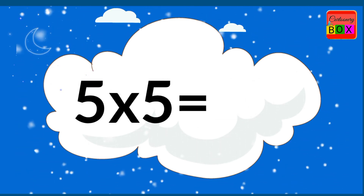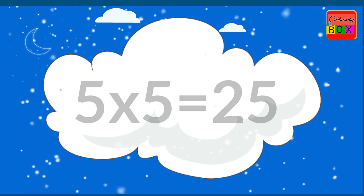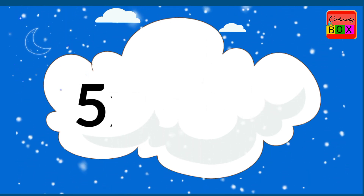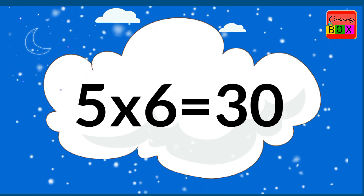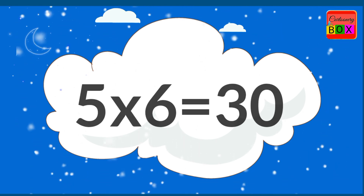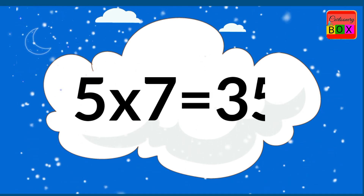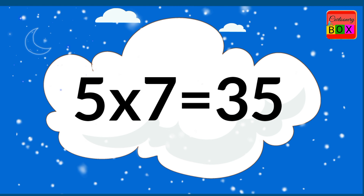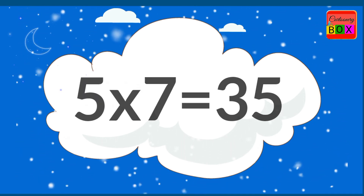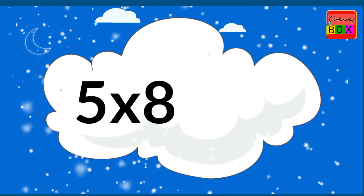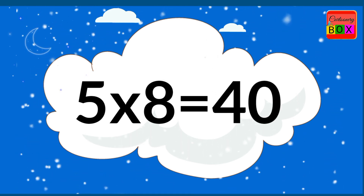Five fives are twenty-five. Five sixes are thirty. Five sevens are thirty-five. Five eights are forty.